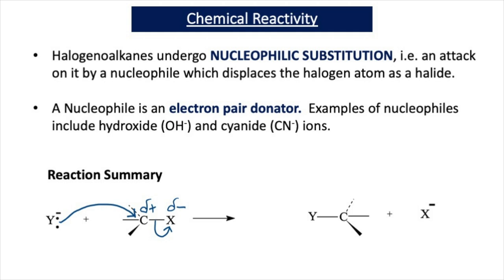When the nucleophile attacks the delta-plus carbon, a dative or coordinate bond forms between the nucleophile and the carbon. The result of this mechanism is that the nucleophile swaps places with the halogen atom and a substitution reaction takes place. In this video we're going to look at two examples: hydrolysis of a halogeanoalkane, where the halogeanoalkane reacts with OH⁻ ions, and also the reaction of halogeanoalkanes with a cyanide ion.